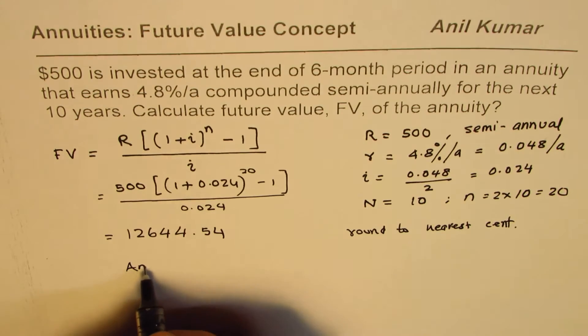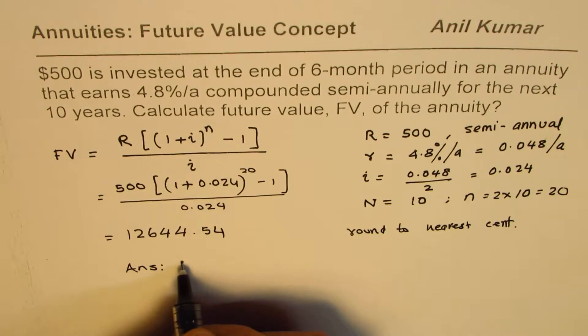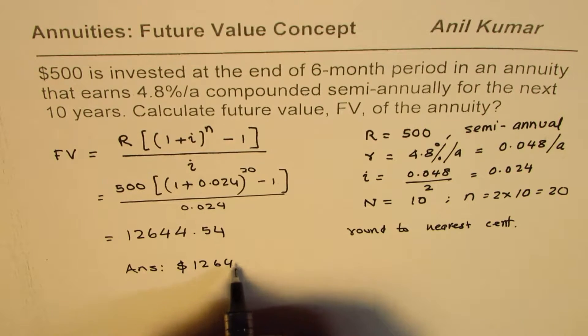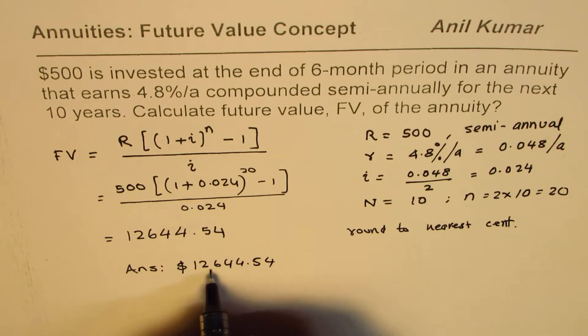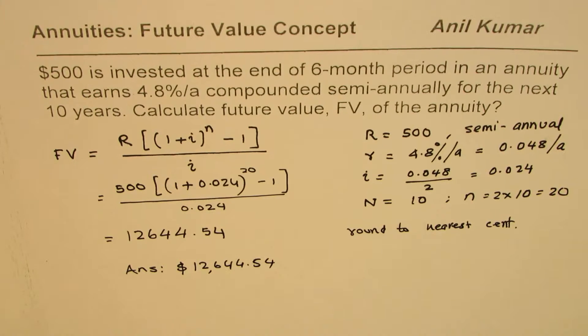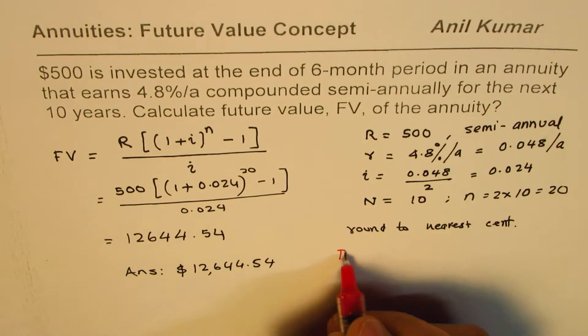That is how we calculate the future value and how we apply this formula. Then you can write down the answer: future value in dollars is $12,644.54 - twelve thousand six hundred forty-four. Now as an added exercise I need you to calculate interest.